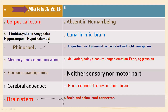The corpus callosum is a unique feature of mammals that connects the left and right hemispheres. The limbic system — comprising amygdala, hippocampus, and hypothalamus — is associated with motivation, pain, pleasure, anger, emotion, and fear. Specifically, fear and aggression are associated with the amygdala.